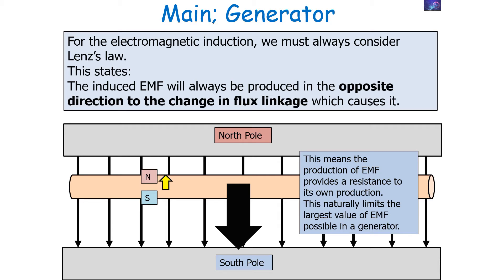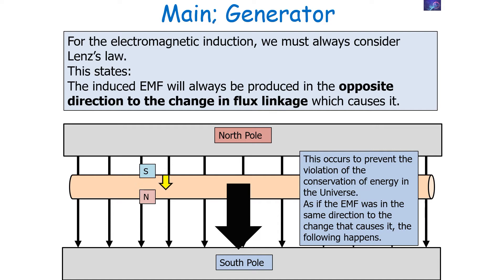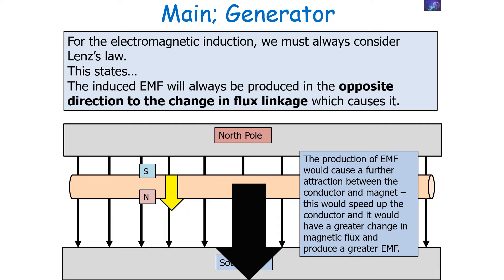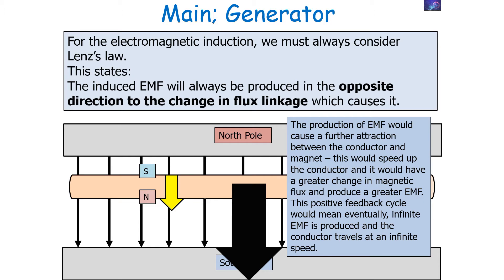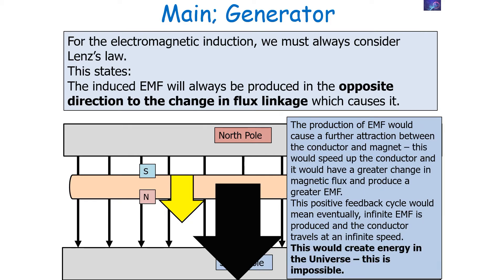This naturally limits the largest value of EMF possible in a generator. If the EMF were in the same direction as the change that causes it, you would have a violation of the conservation of energy, because the production of EMF would cause further attraction between the conductor and the magnet. This would speed up the conductor, causing a greater change in magnetic flux and producing a greater EMF — a positive feedback cycle resulting in infinite EMF and infinite speed, creating energy, which we know is impossible. So to conserve energy, the change in flux linkage and the direction of the induced EMF must be in opposite directions.